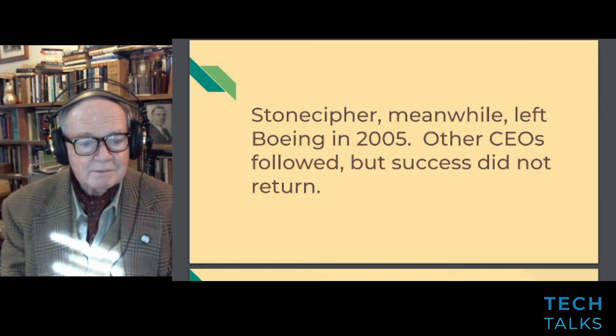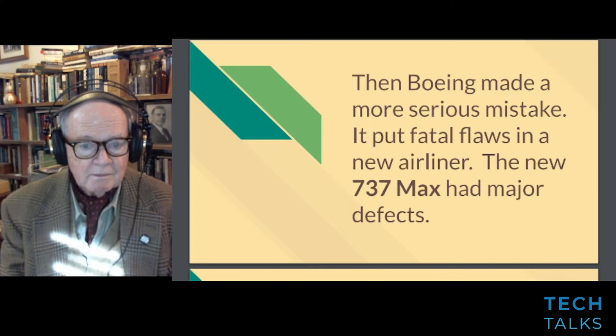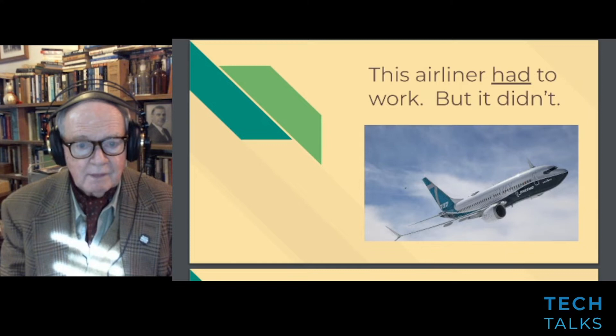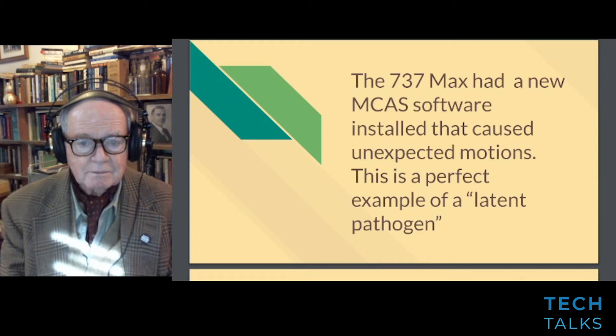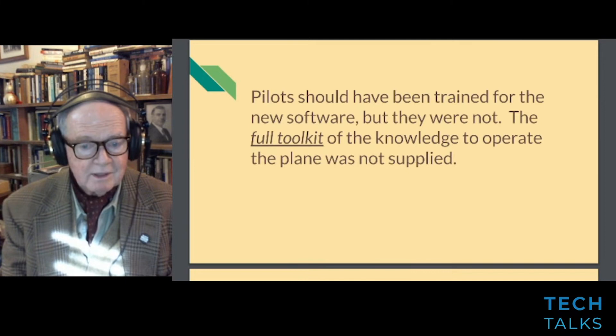Then Boeing made a more serious mistake — it put fatal flaws in a new airliner, the 737 MAX. The 737 MAX had a new MCAS software installed that created unexpected motions. This is a perfect example of a latent pathogen, as we say in the accident business. The pilot should have been trained for the new software but they were not. The full toolkit of knowledge to operate the plane was not supplied.